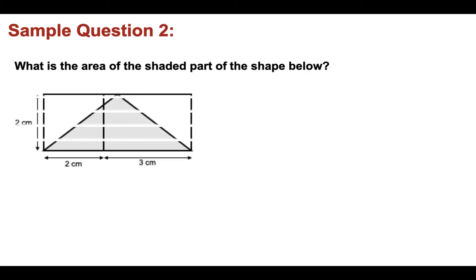Sample question two. What is the area of the shaded part of the shape below? And the answer here is 5 centimeter squared. And to reach that answer, we would use the calculation of half times base times height, which is half times 5 times 2 equals 5.